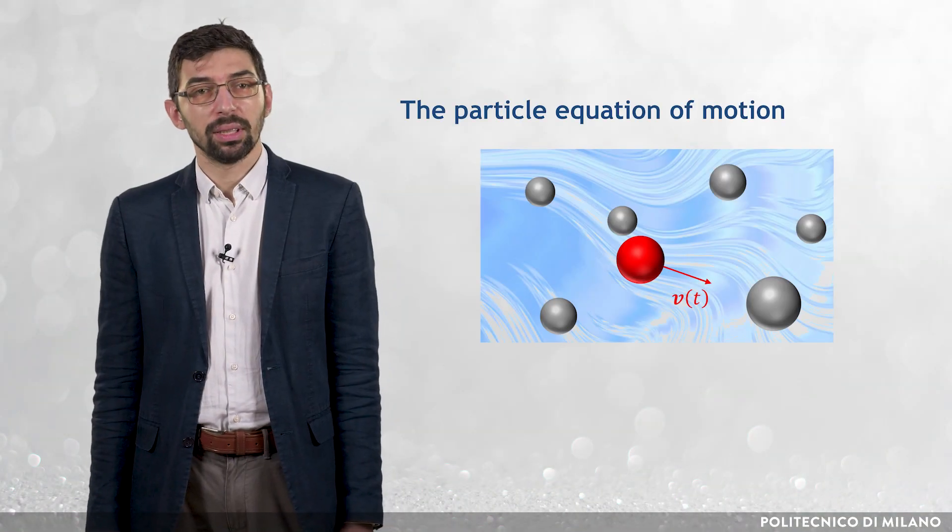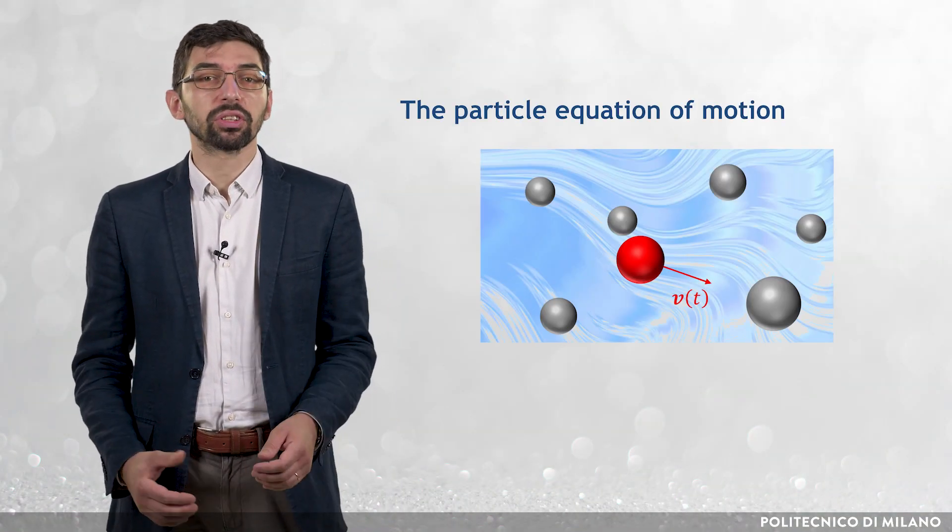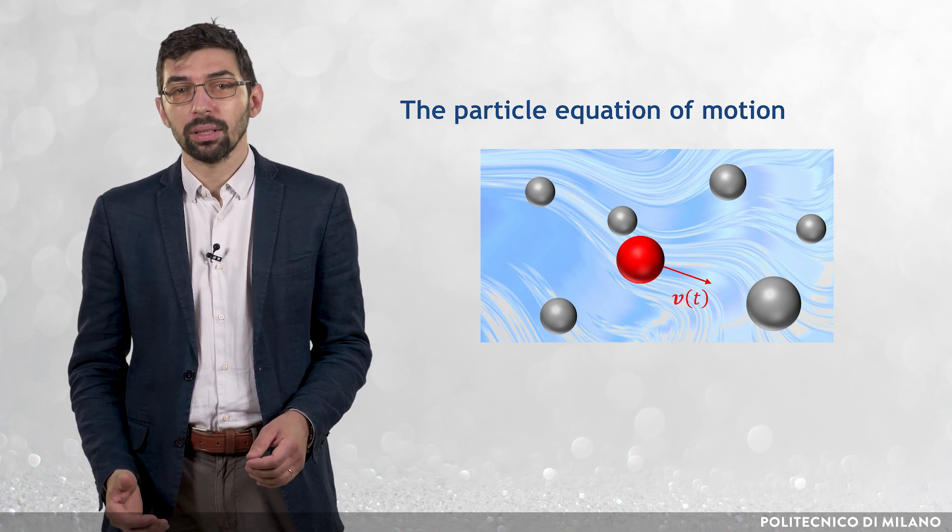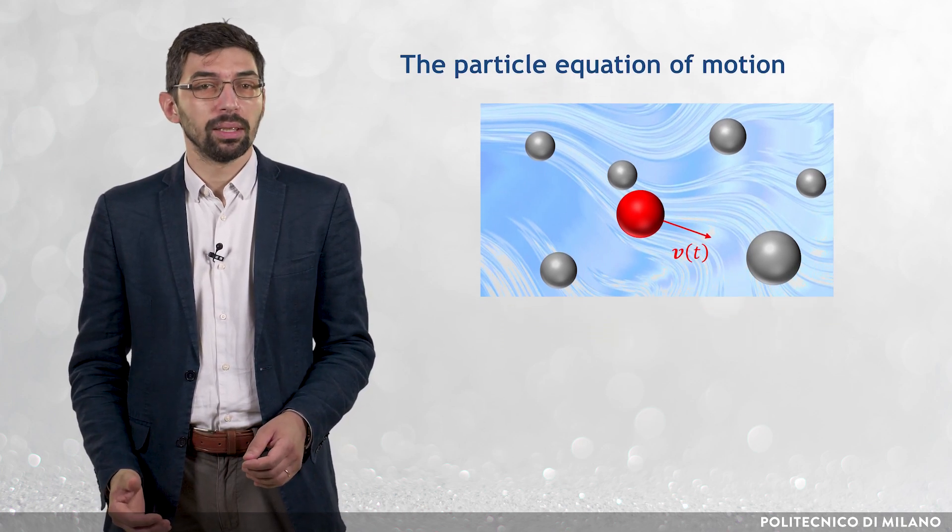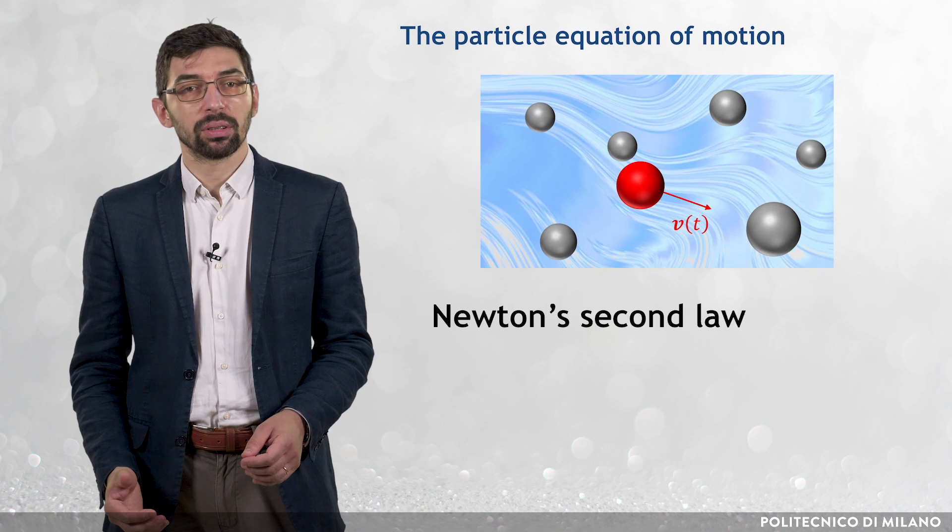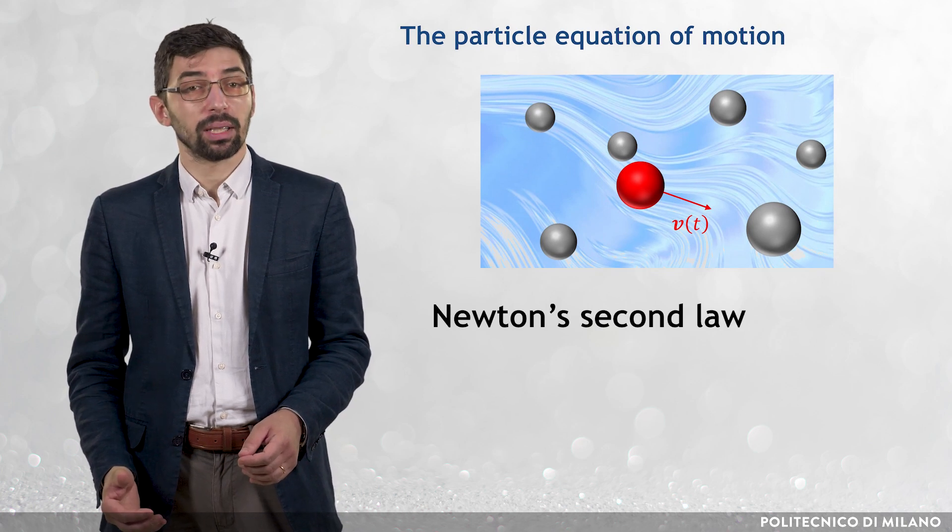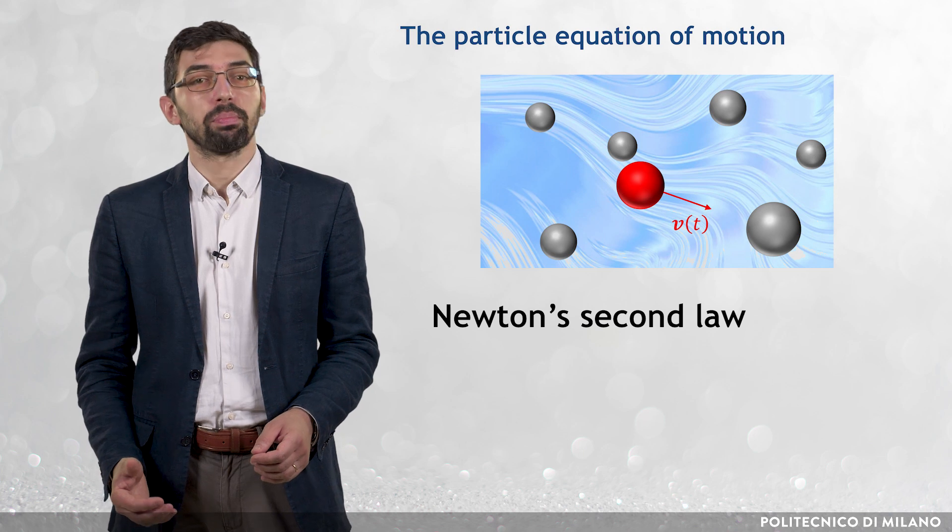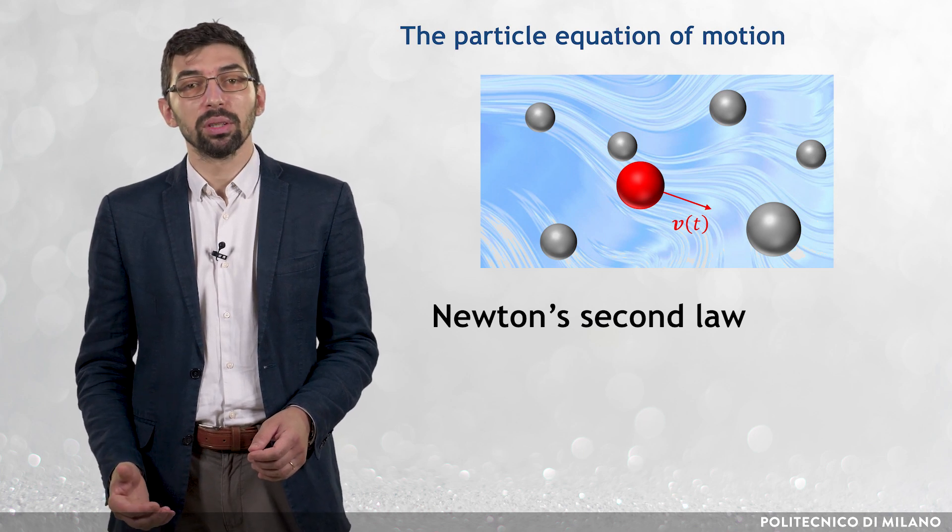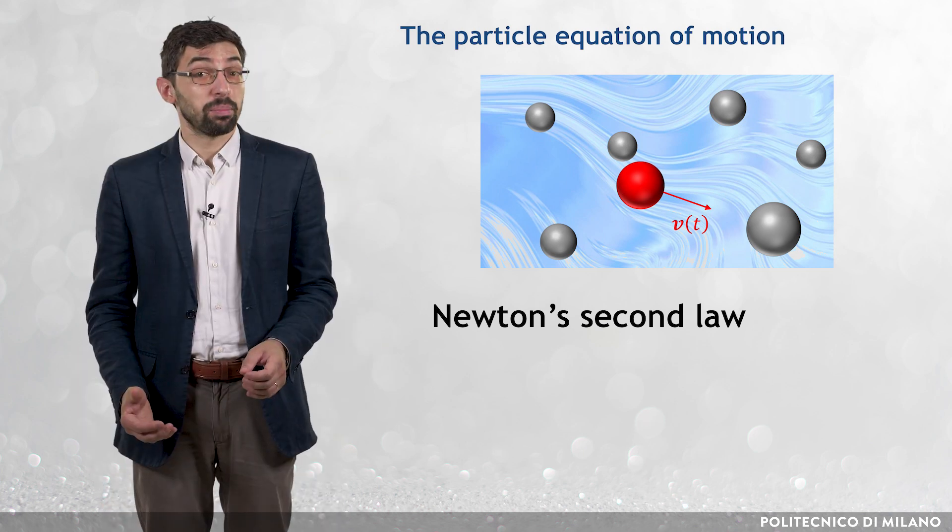The particle equation of motion is a mathematical model which describes the movement of the particle in a particle-laden flow. It essentially relies on the application of Newton's second law to the particle, that is, particle mass times particle acceleration equal to the forces exerted on the particle.